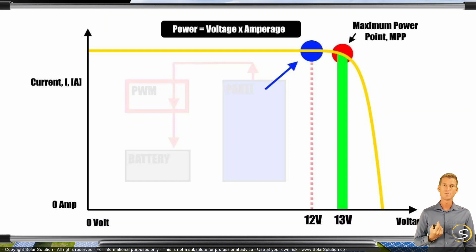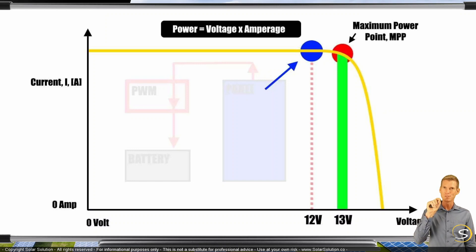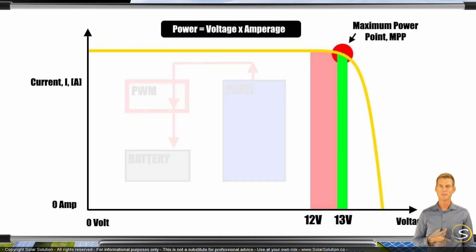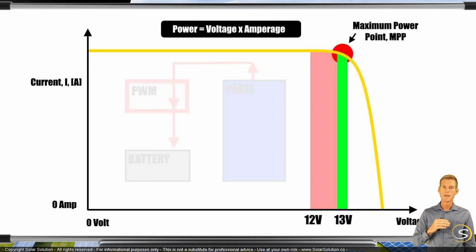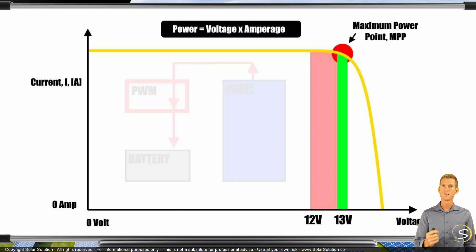Normally, if you purchase a 12 volt panel or match your panel to your battery — 12, 24, or 48 volts — the manufacturer has already tried to place the maximum power point voltage as close as possible to the battery voltage you normally operate at. As you're charging your battery, the voltage slowly increases and moves towards the 13 volt point, so if the battery voltage is 13 volts you would be drawing the maximum amount of power from the panel.